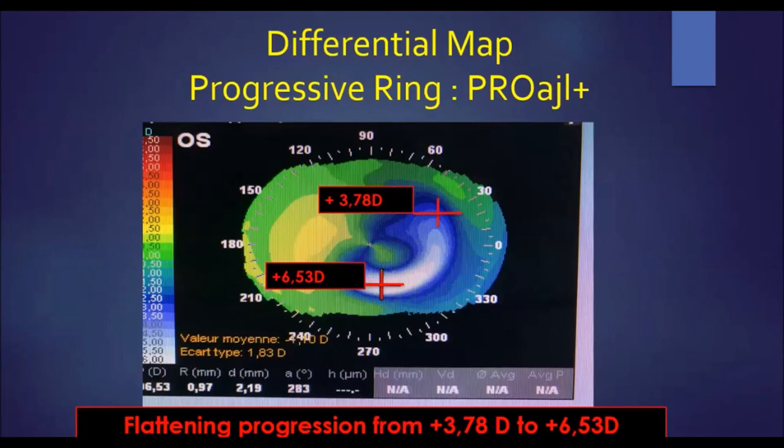This is a topographic differential map of a progressive ring, and as we can see, there is a flattening progression from the top to the bottom of about three diopters.